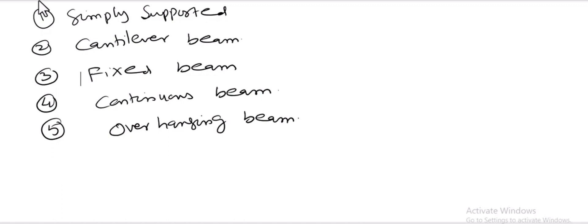These are the five most common types of beams which are most frequently used in construction projects, whether it is building construction or bridge construction. Now we will be discussing these five types in detail one by one, and number one is the simply supported beam.